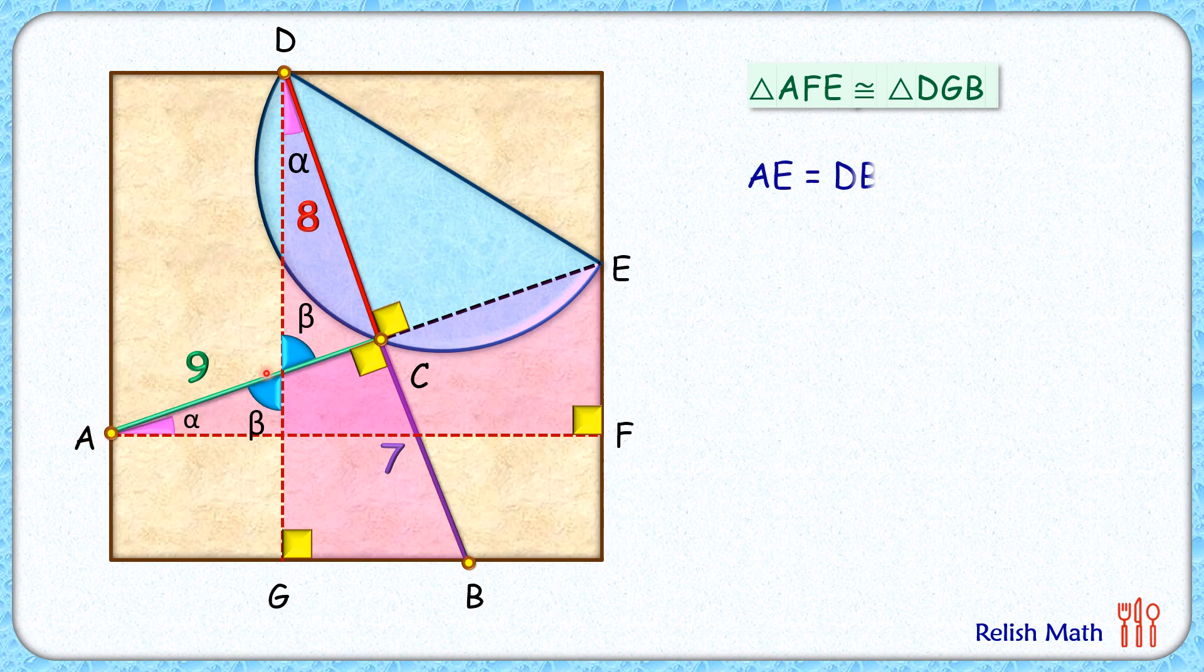We can say that AE length equals DB length. AE length is 9 plus CE, and DB length is 8 plus 7. Solving, we get CE length as 6 centimeters. So this length CE here is 6.